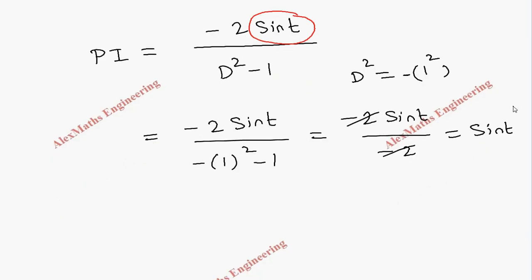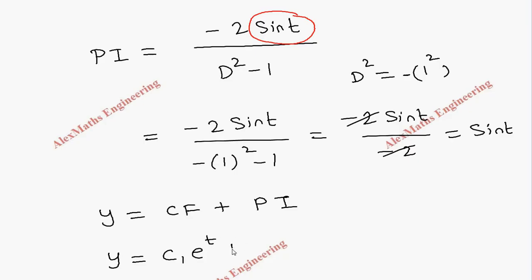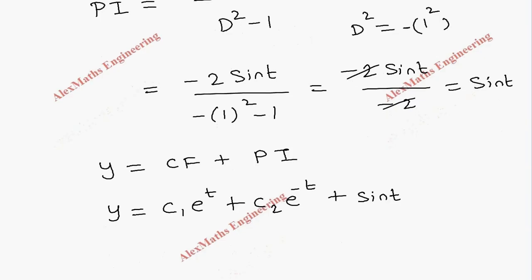The complete solution is y equals CF plus PI. So y equals c1·e^t plus c2·e^(−t) plus sin t. We got one part of the solution, which is y.